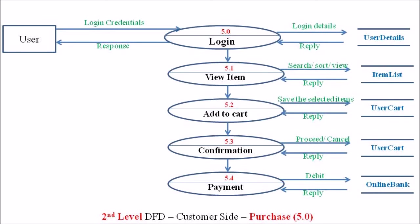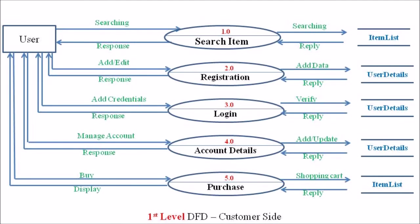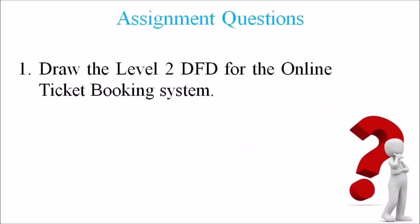These are the individual processes associated with the fifth process, purchase, on the customer side of the online website. Hope you have understood this topic. Please go through this assignment question: draw the Level 2 DFD for the online ticket booking system.